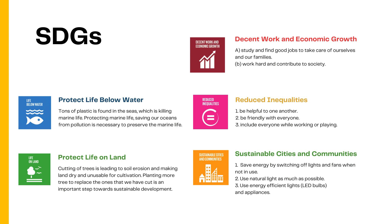To protect life below water — tons of plastic is found in the seas which is killing marine life. Protecting marine life and saving our oceans from pollution is necessary to preserve marine life. Protect life on land — cutting of trees is leading to soil erosion and making land dry and unusable for cultivation. Planting more trees to replace the ones that we have cut is an important step towards sustainable development.